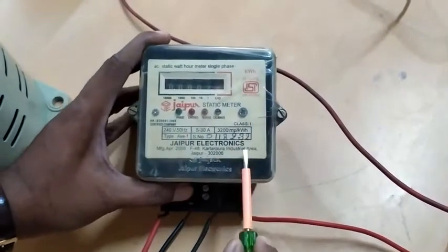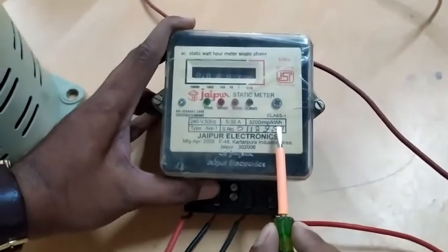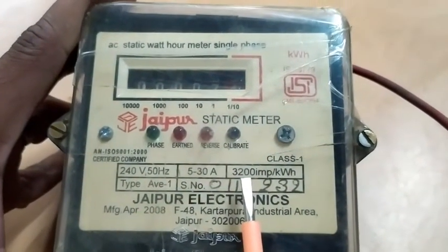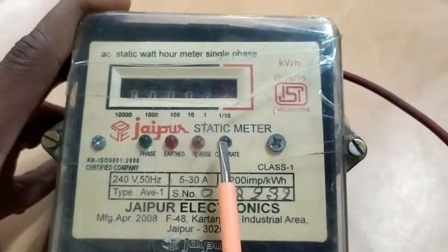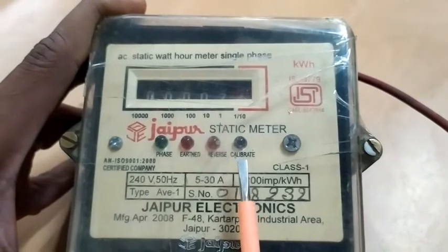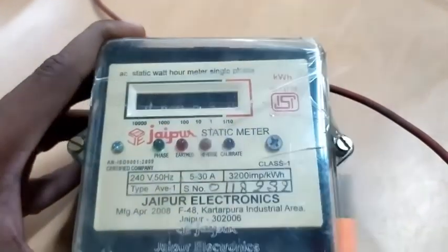In this energy meter, we are having 3000 impulse per kilowatt hour. One unit is having 3000 impulses. Here is the calibrate, it will blink depends upon the one impulse. If we get 3000 total, it becomes one unit.